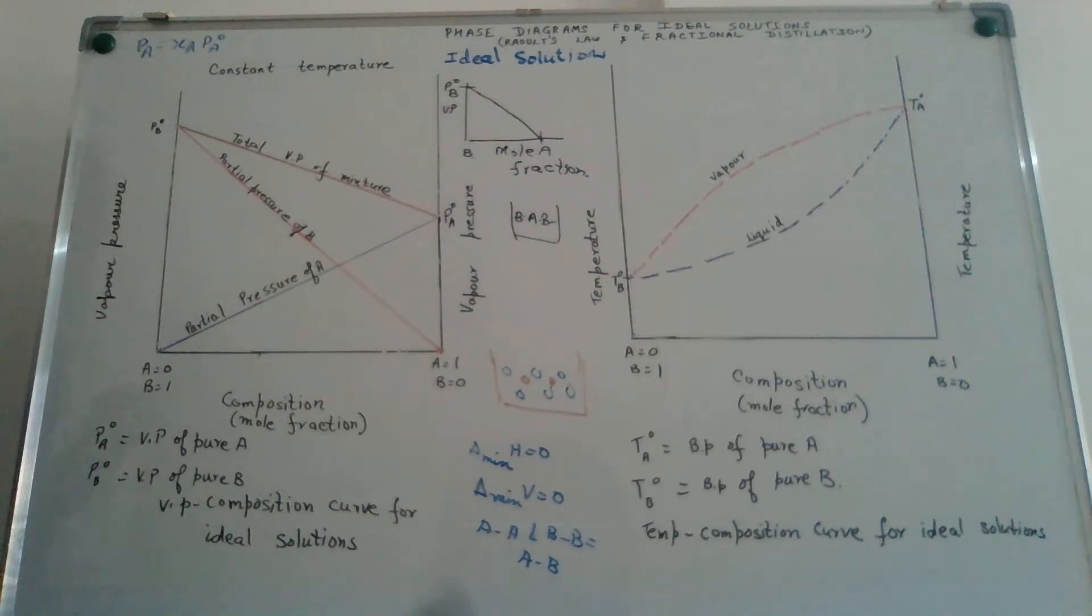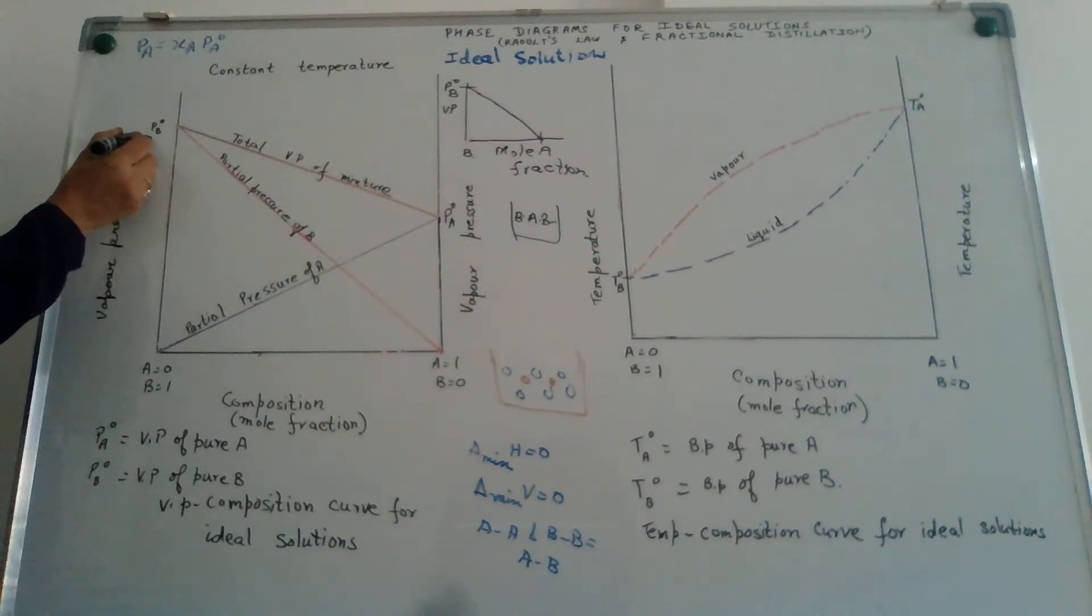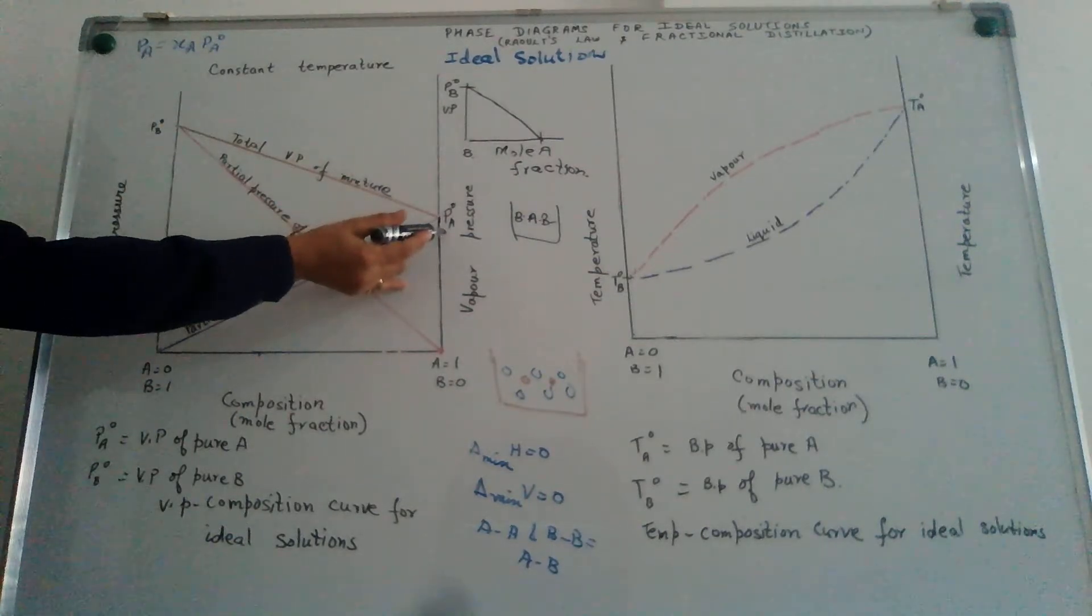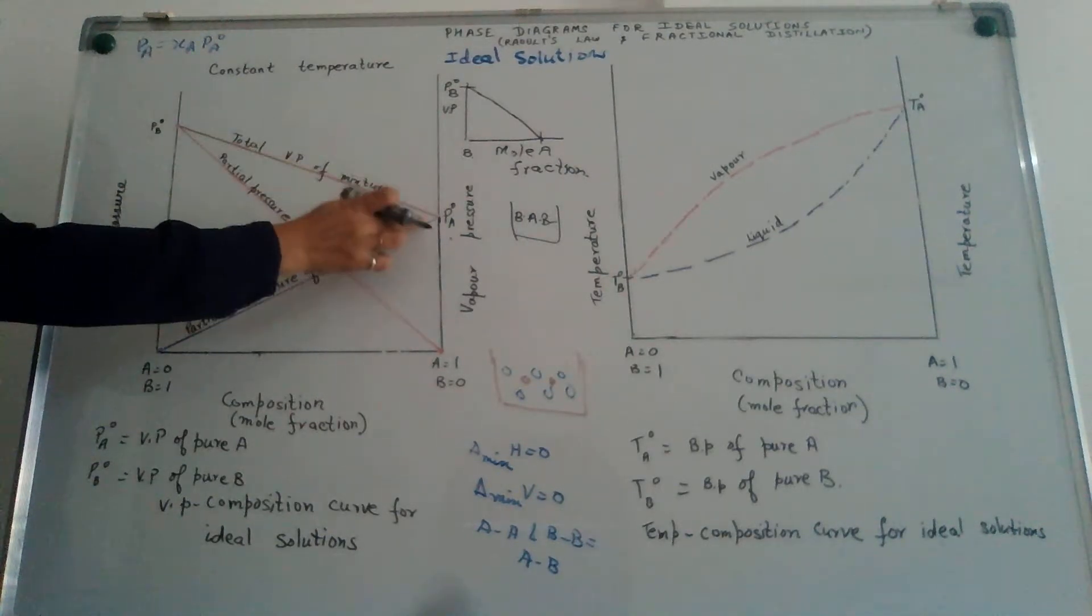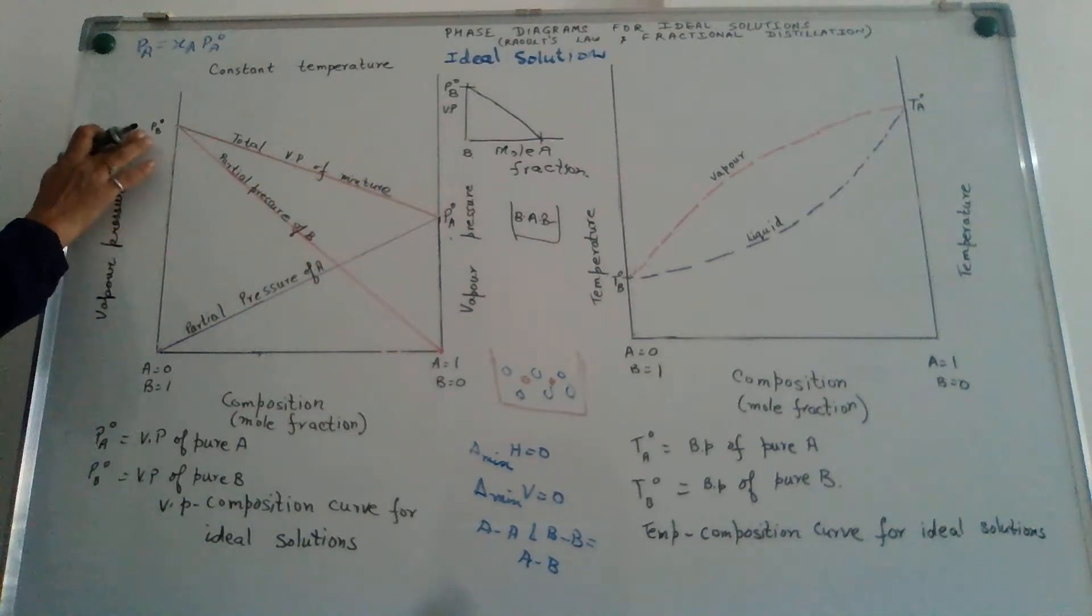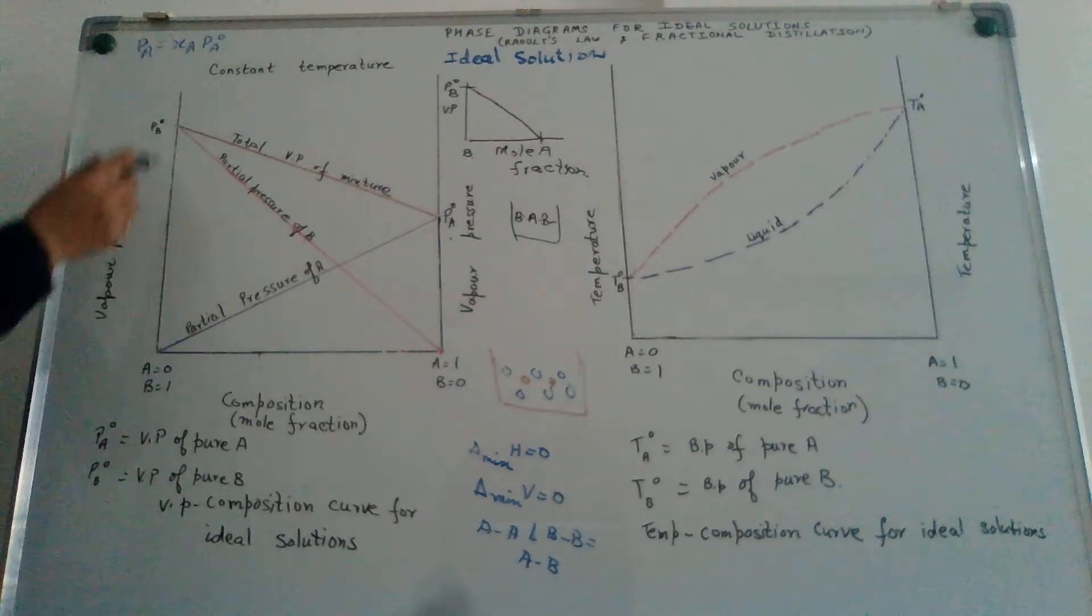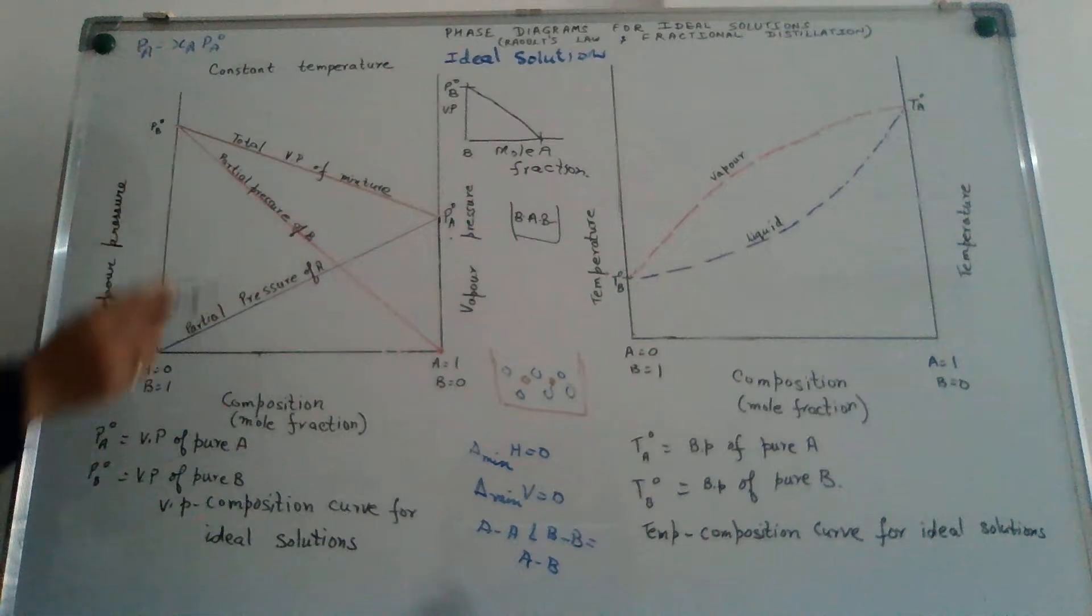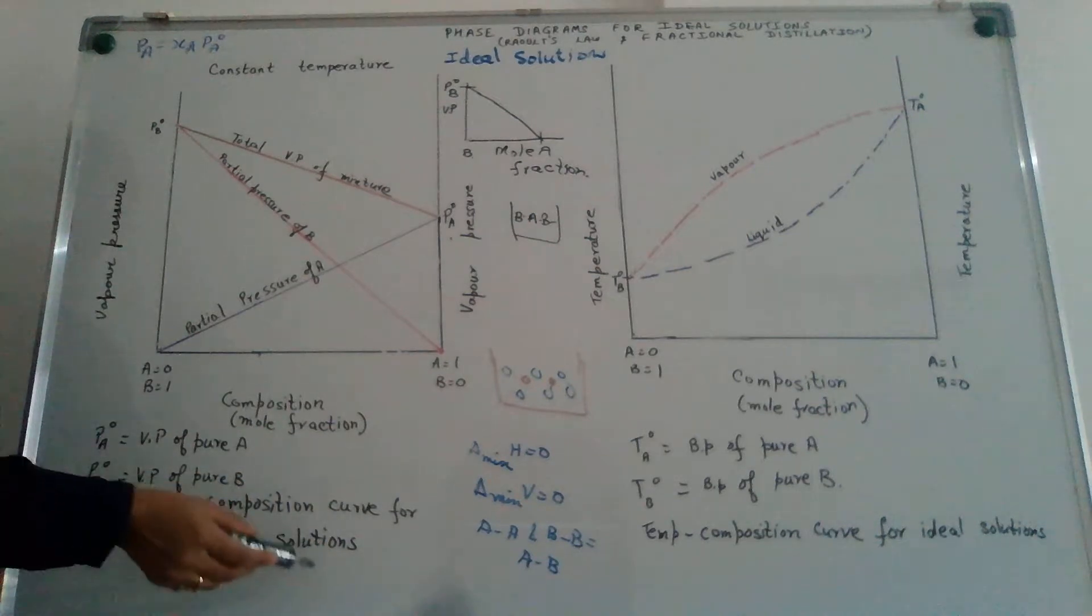In ideal solutions, the total vapor pressure will equal the sum of the partial pressures of the components. The total vapor pressure will always lie in between that of pure B and that of pure A. At no point does this line go above the two points or below the two points. This is the max, this is the minimum. Vapor pressure on the y-axis, composition on the x-axis. That is why it is called the vapor pressure composition curve for ideal solutions.